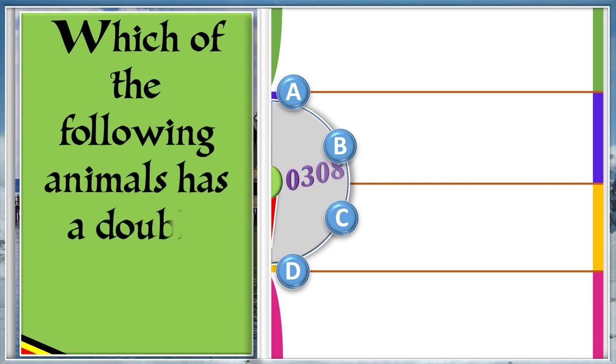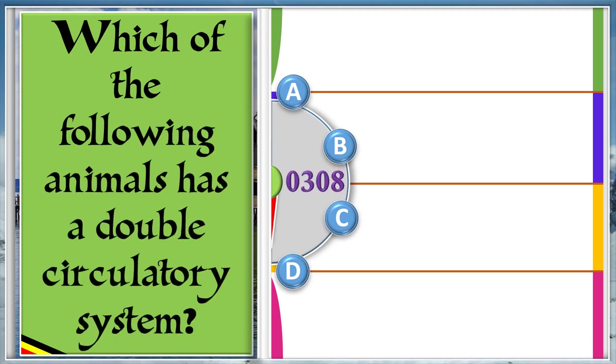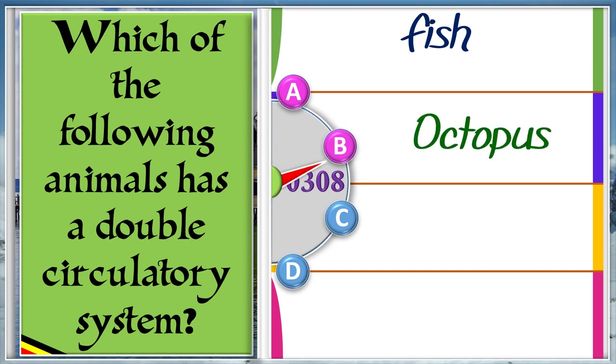Which of the following animals has a double circulatory system? A: Fish. B: Octopus. C: Frog. D: Squid. And the answer is C, frog.